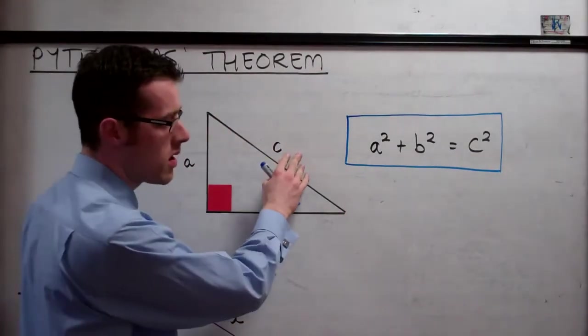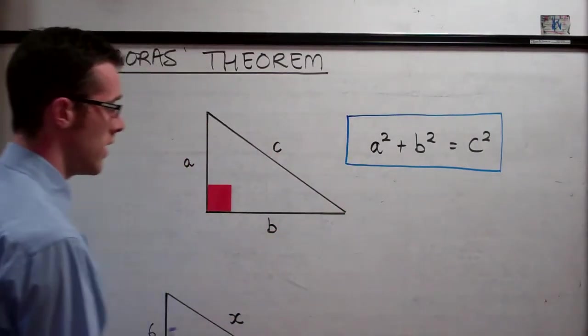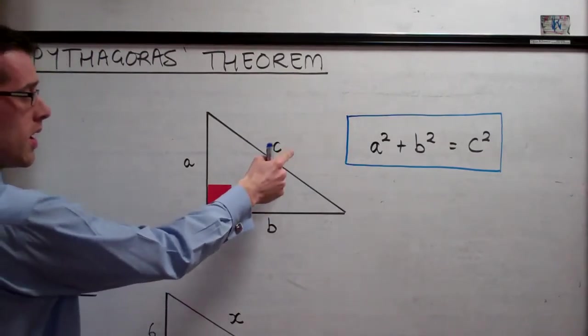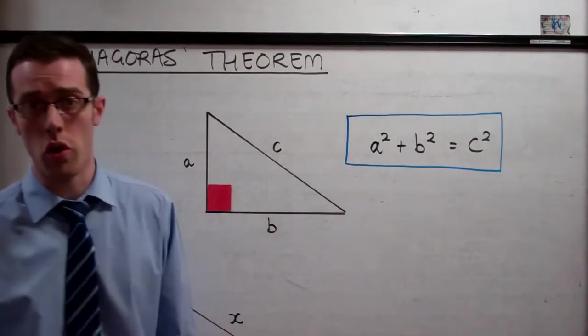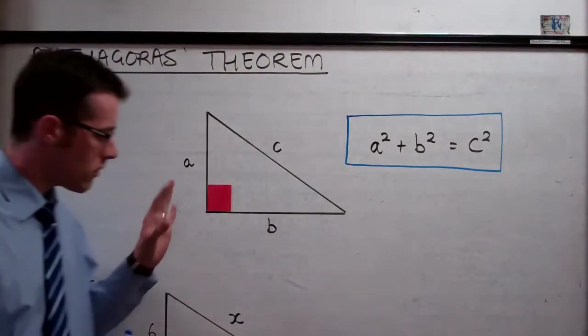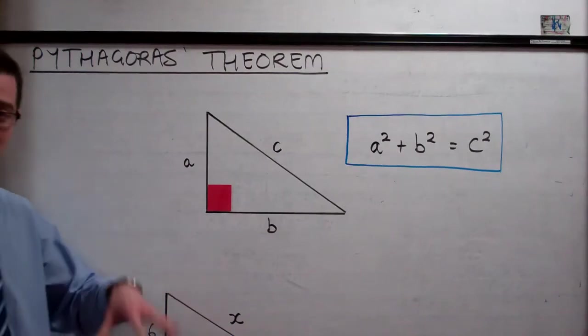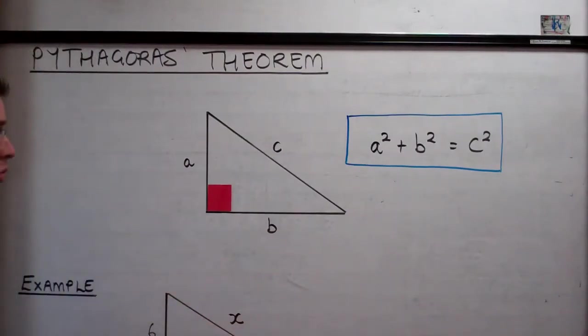Now c is always the longest side, or the hypotenuse, as we've just seen. So a squared plus b squared is equal to c squared, and that is true for all right-angled triangles. So let's look at an example, and I'll show you how you work with this to find missing sides in right-angled triangles.